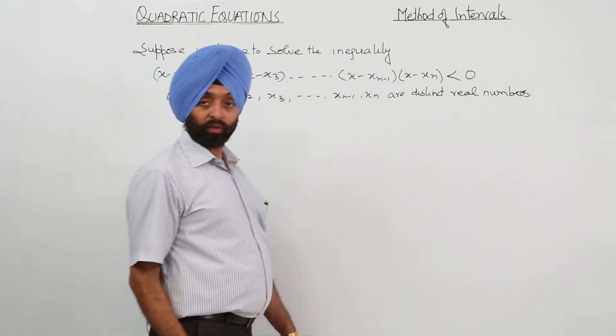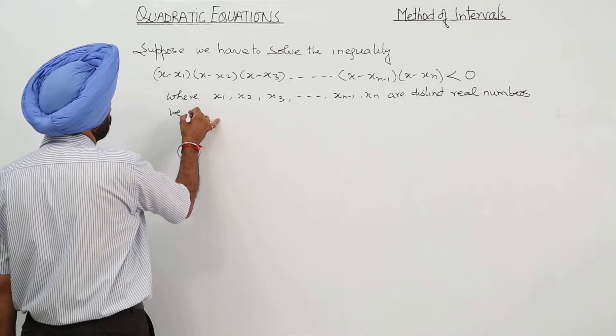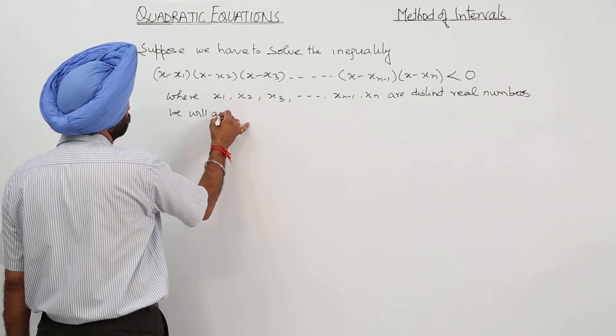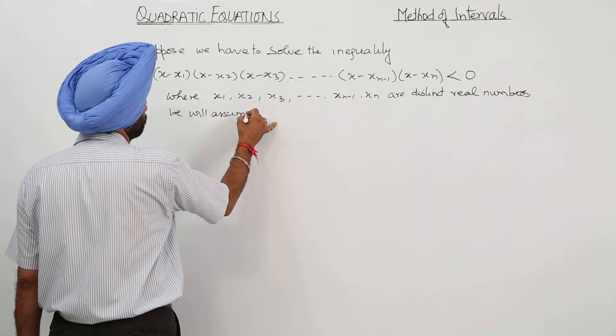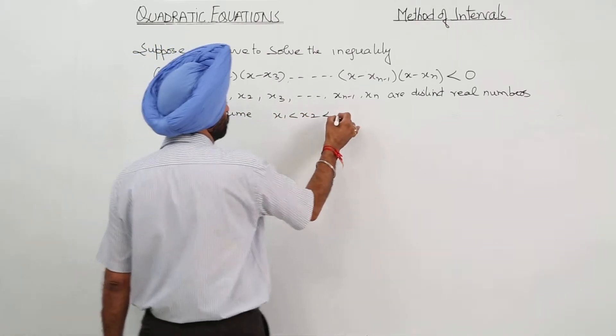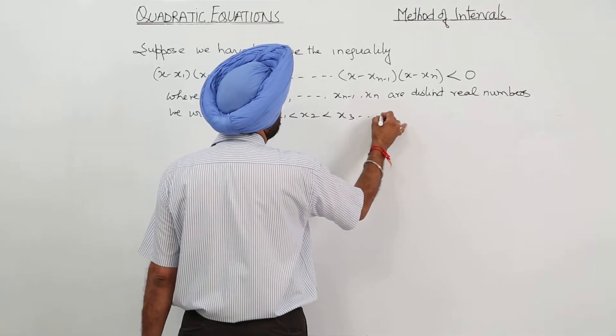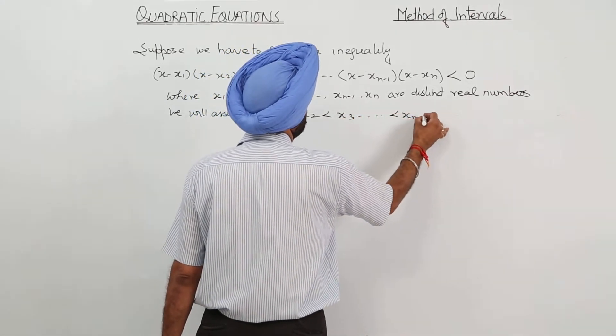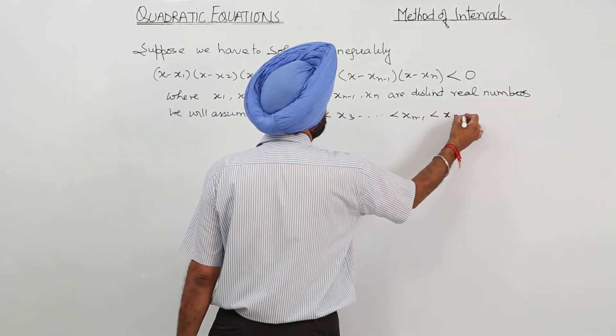And what we are going to assume? We will assume that x1 is less than x2 is less than x3 is less than xn minus 1 is less than xn.